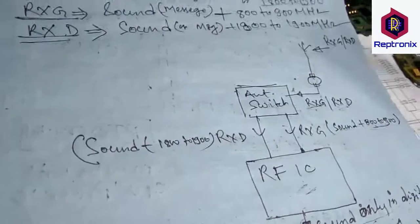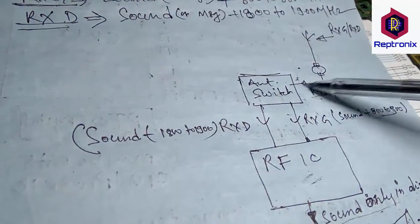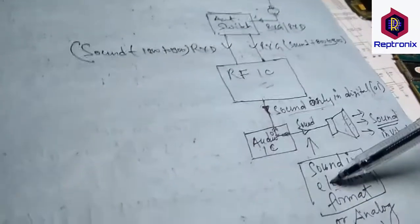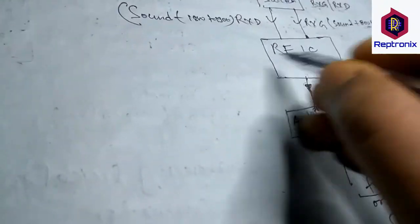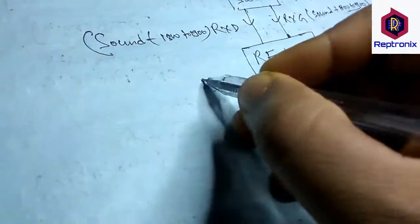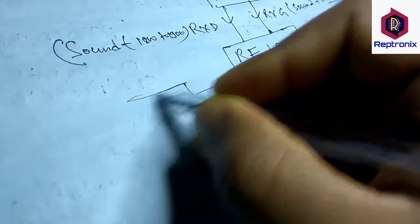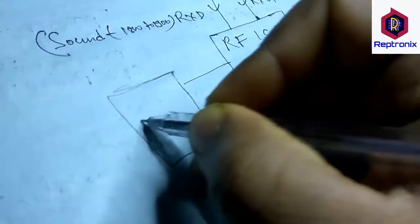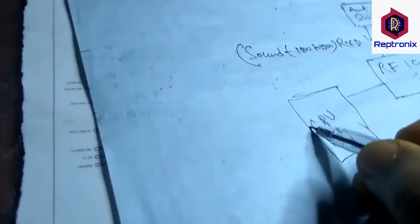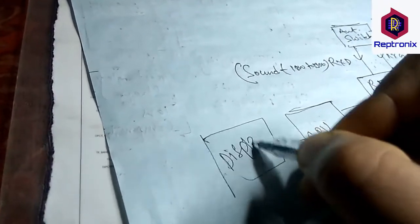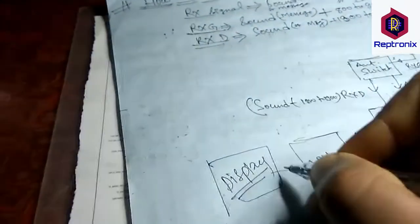This is how the signal from the mobile is received. If it is a message rather than a call, then the speaker is not involved — the message goes from the RFIC to the CPU, and the CPU sends the message to the mobile display.